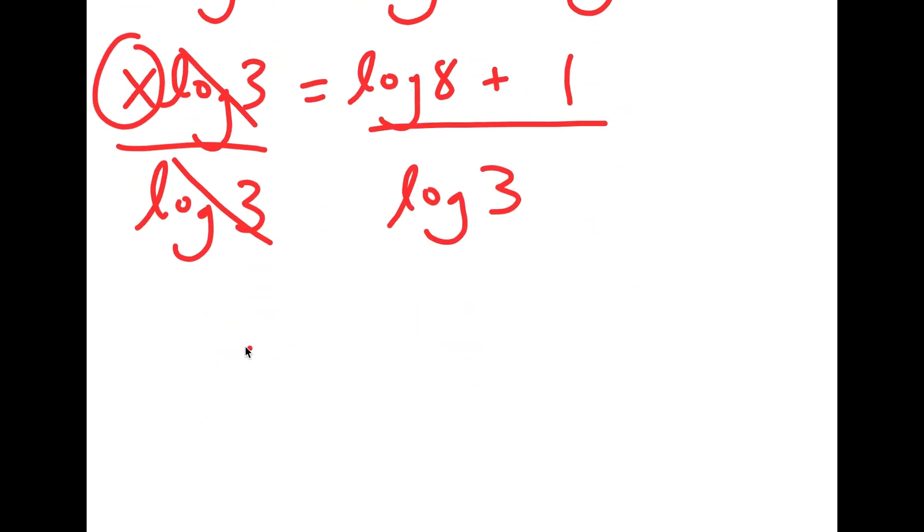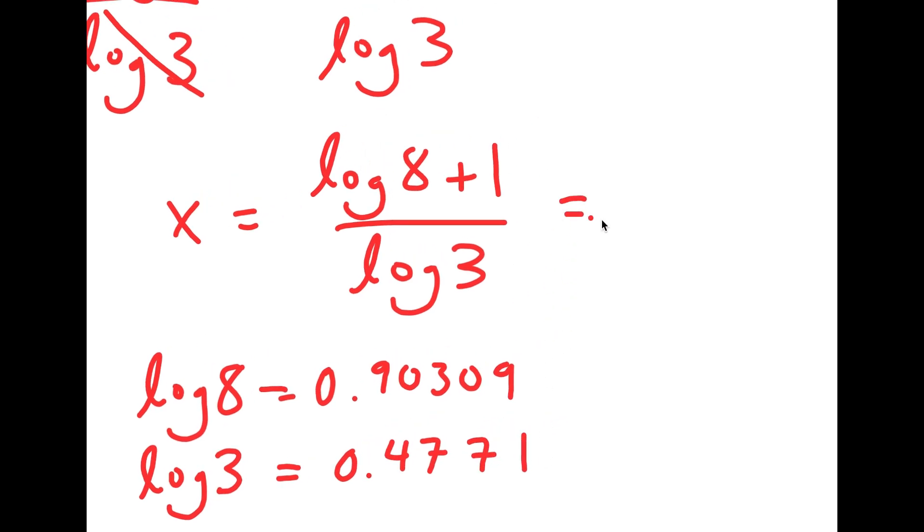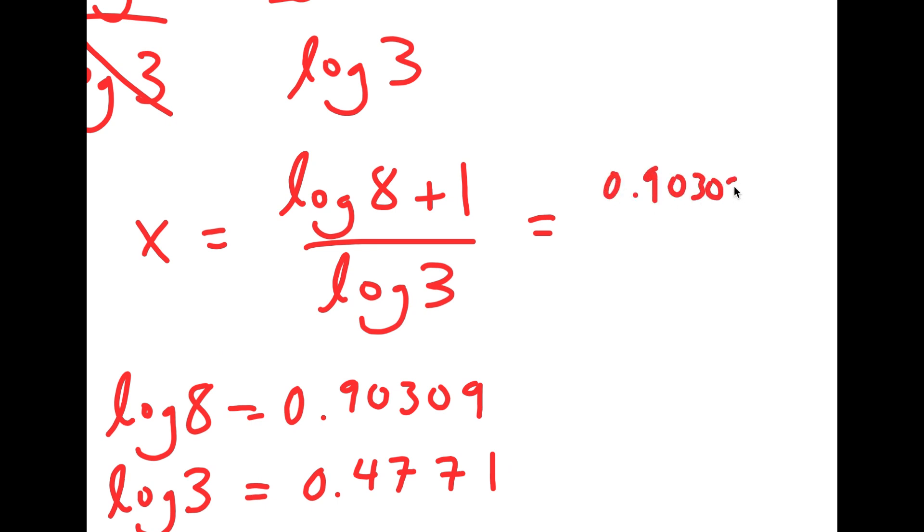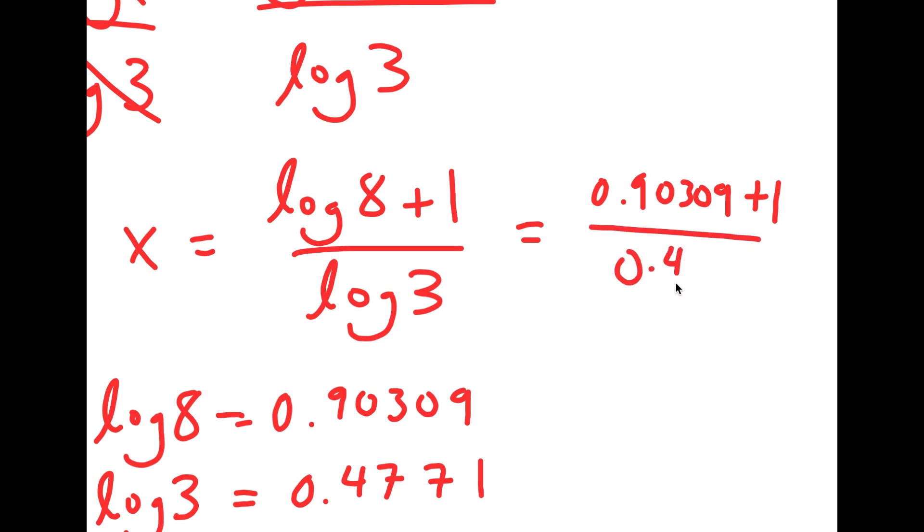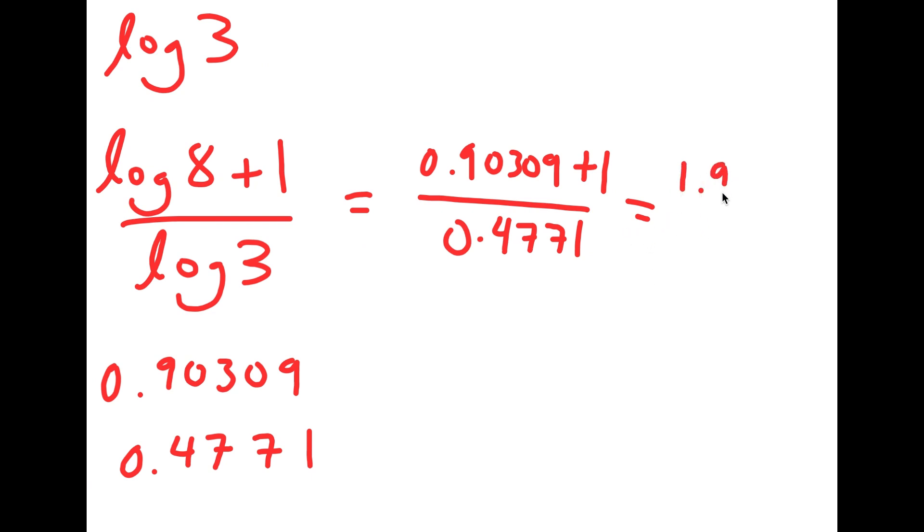So this cancels out, and I get x is equal to log 8 plus 1 over log 3. Now, log 8 is equal to 0.90309 and log 3 is equal to 0.4771. So this is going to equal 0.90309 plus 1 over 0.4771, and this is equal to 1.90309 over 0.4771.